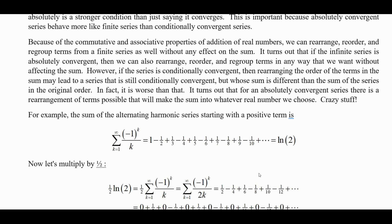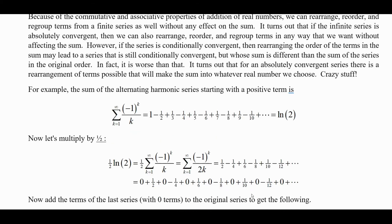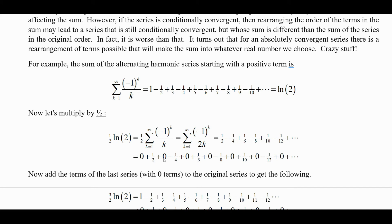But now let's take this. Remember, this is summing in this order: 1, then 1 minus 1/2, then plus 1/3, and so on — looking at the sequence of partial sums to see what it approaches. Now let's multiply by 1/2 and distribute that all the way across. So now we have 1/2 minus 1/4 plus 1/6 minus 1/8, which we can think of as 0 plus 1/2 plus 0 plus negative 1/4 plus 0 plus negative 1/6 and so forth.